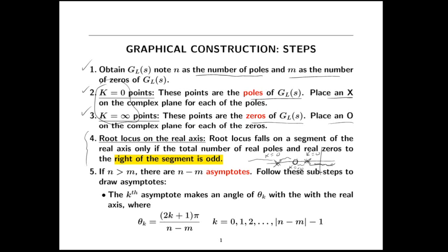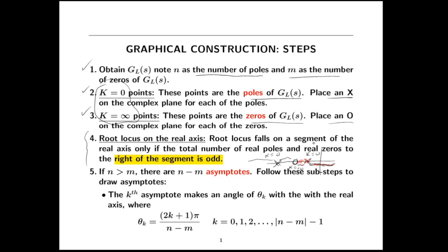To analyze whether you have root locus on a segment, look to the right of that segment and count up the poles and zeros to the right of it. If that's an odd number, then you have root locus there. If I count up the poles and zeros to the right of the first segment I have zero — that's an even number so there's no root locus. For the next segment I see one pole, that's odd, so I do have root locus there — I'll put some little hash marks. Further along I have two things, a zero and a pole, so there's no root locus. On the last segment I have three things, so I know there's root locus. It's that simple.